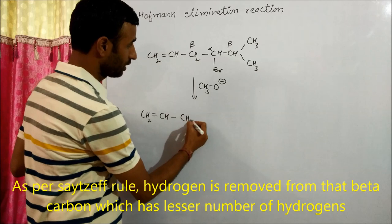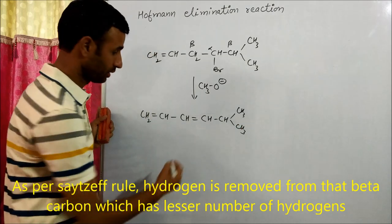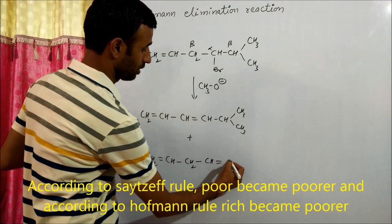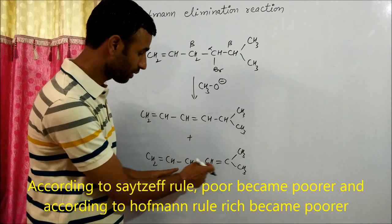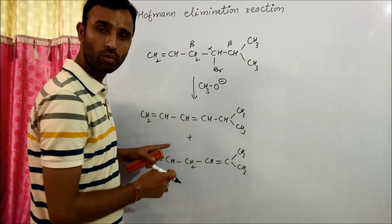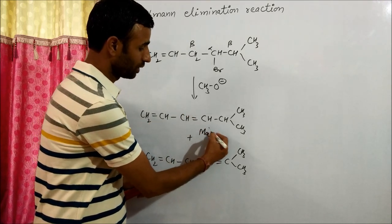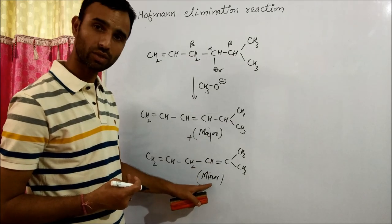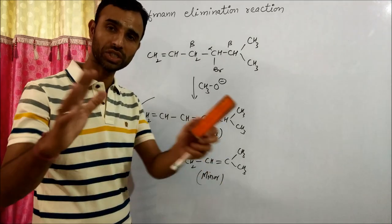If we remove this hydrogen, we get conjugated double bonds. If we remove hydrogen from the other side, we get an isolated double bond. A double bond separated by more than one single bond is an isolated double bond, while double bonds adjacent to each other are conjugated double bonds. Conjugated dienes are more stable than isolated dienes, so the conjugated product is the major product — the Hofmann elimination product. These are the four cases where Hofmann elimination dominates over Zaitsev elimination.